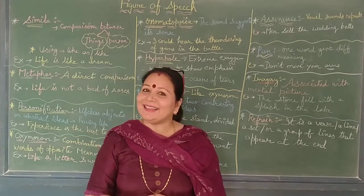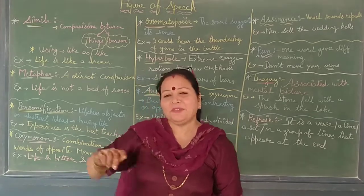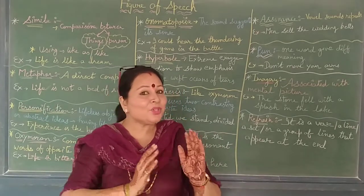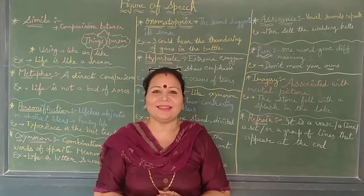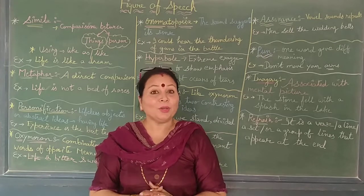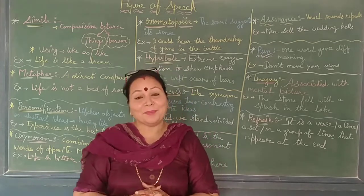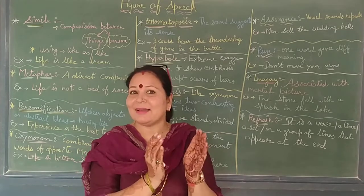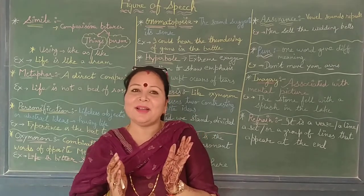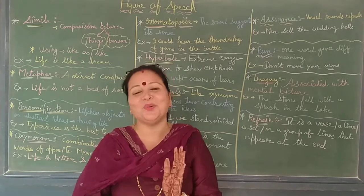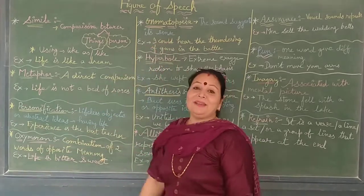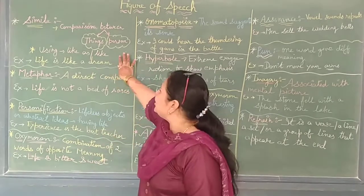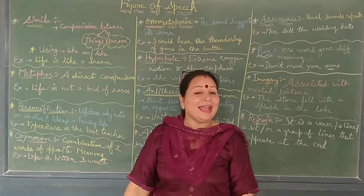If you translate figure of speech into Hindi, it becomes 'alankar.' To understand it simply, if someone says 'you are looking very nice,' that is a plain sentence. But if I say 'you are blossoming like a rose,' you have added something that gives a more effective and natural effect. This is called figure of speech, and it is of many types.